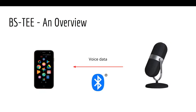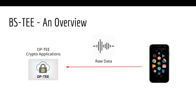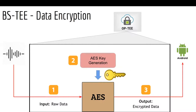Here's an overview of the BSTEE system. In this case, an IoT device has recorded some voice data and sent it over to our mobile phone over the Bluetooth protocol. When the data reaches the phone, it will be directly sent down to the OPTEE subsystem. In there, this raw data will go through a series of crypto applications implemented by ourselves and get encrypted before it reaches Android's own storage. We chose AES for the encryption of actual data due to its fast processing. When the raw data gets into the AES trusted application, the trusted application will generate a random AES key and encrypt the data before it's sent back to the Android file system.